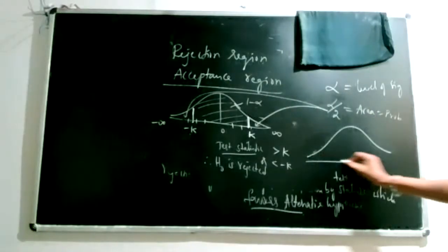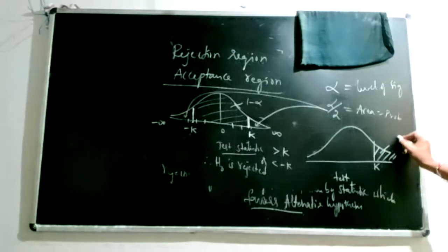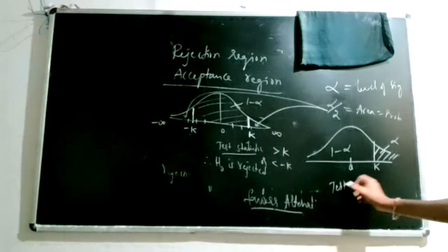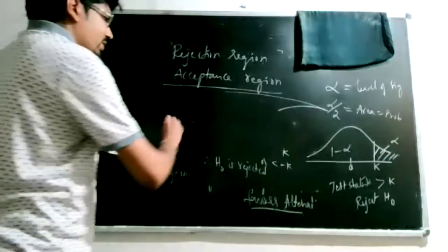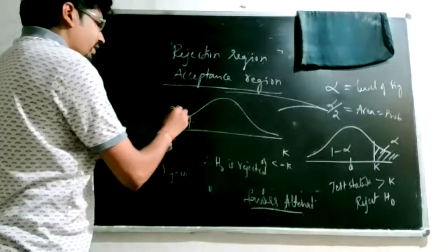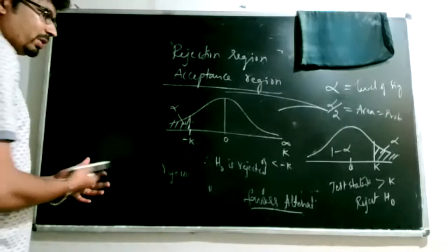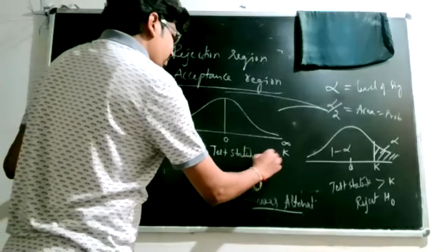For a right-tail test, alpha is on the right and 1 minus alpha on the left. If the test statistic is greater than k, we reject the null hypothesis. For a left-tail test, the entire alpha region is on the left with cutoff minus k, and we reject the null if the test statistic is below minus k. This applies when the test statistic distribution is the standard normal curve.